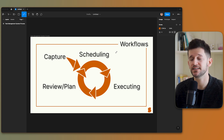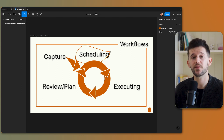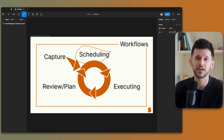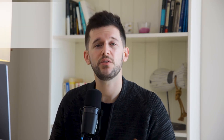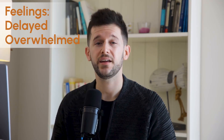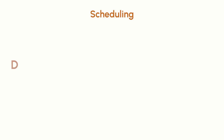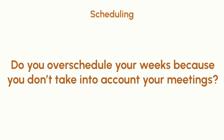The next part of the system, once we have captured the information, is the scheduling. Here we're talking about tasks and project management, so those tasks should be scheduled. Whenever this part of the system is not working, we will feel delayed and overwhelmed. Here are some questions to audit this part: Do you overschedule your weeks because you don't account for your meetings? Not accounting for time spent in meetings leads to overscheduling, and at the end of the week you'll feel as if you haven't accomplished anything — even though in reality that may not be true.